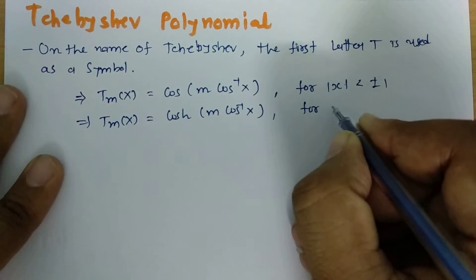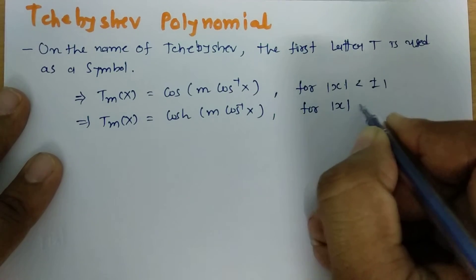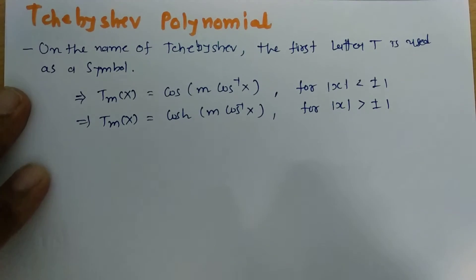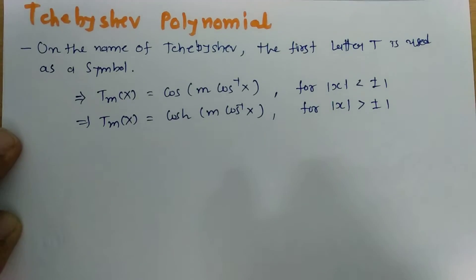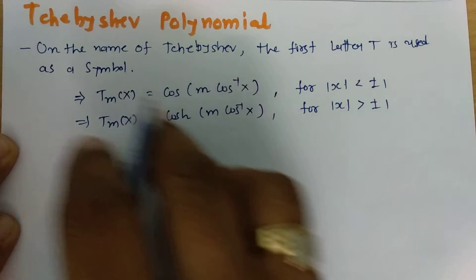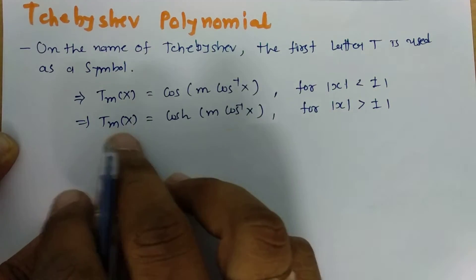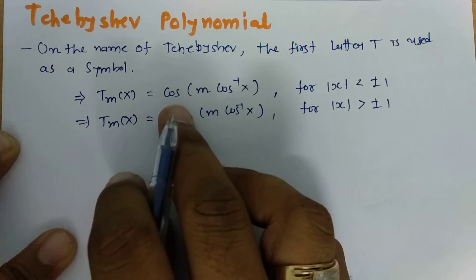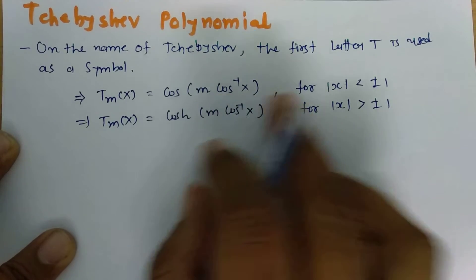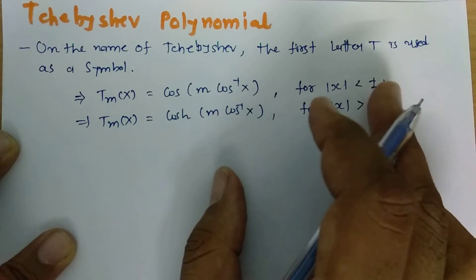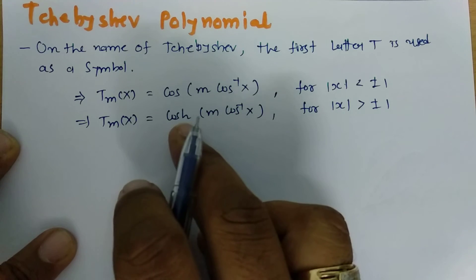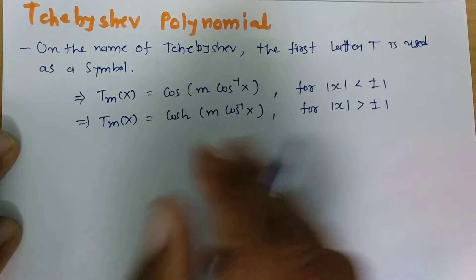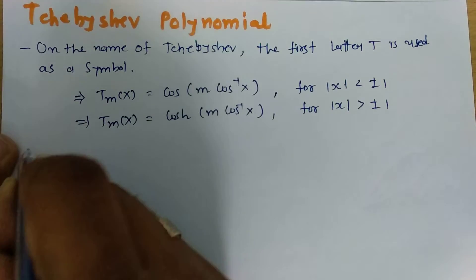That is the case for mod of x greater than or equal to plus or minus 1. Now let us derive the Chebyshev Polynomial from this function. Tm of x equals cos of m times cos inverse of x for x less than plus or minus 1, and cosh of m times cos inverse of x for x greater than plus or minus 1.